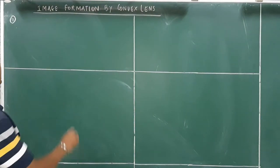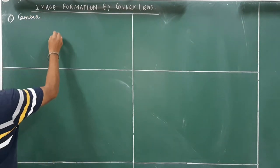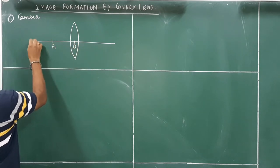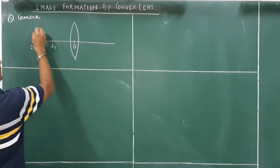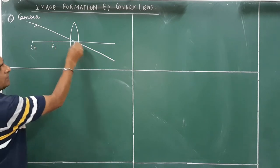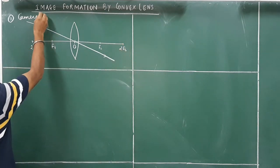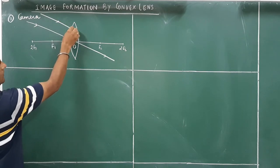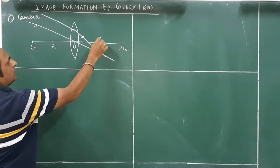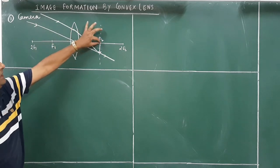Let us see our first case — how a lens can be used in a camera. We have a convex lens with f1 and 2f1 marked. We consider an object placed at infinity. The ray coming from the object passing through the optical centre goes undeviated. Another ray parallel to it converges at the second principal focus f2. Both rays meet at f2, so the image is formed in the focal plane. If rays are parallel to the principal axis, they meet at the focus.